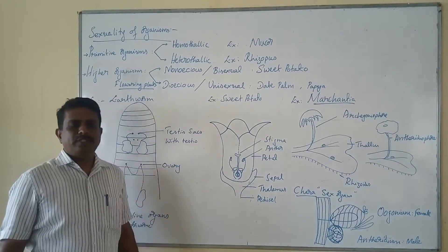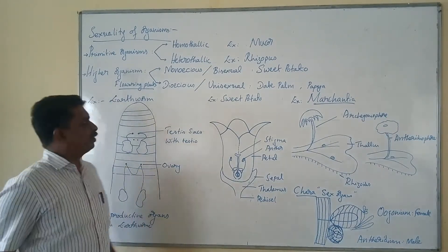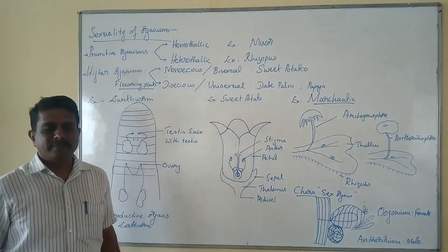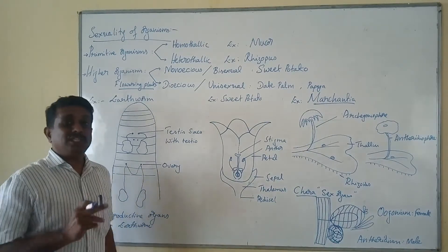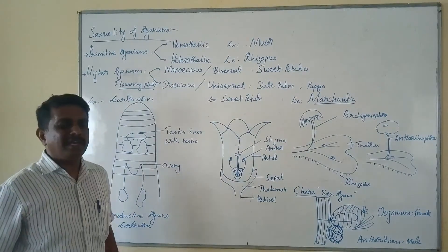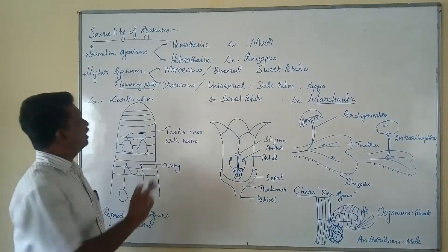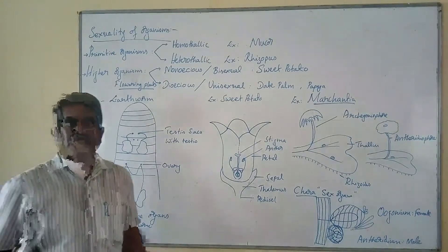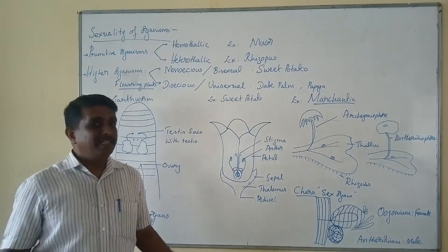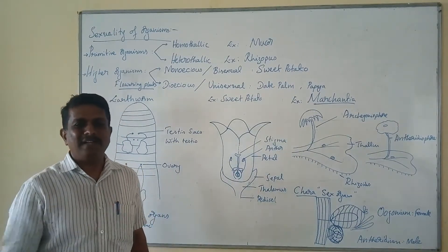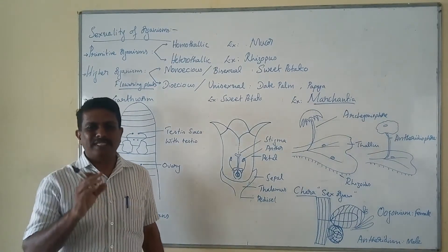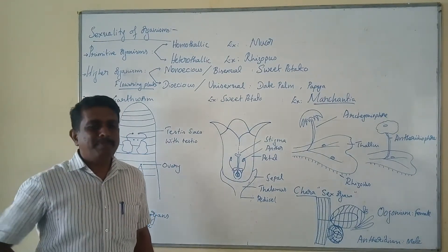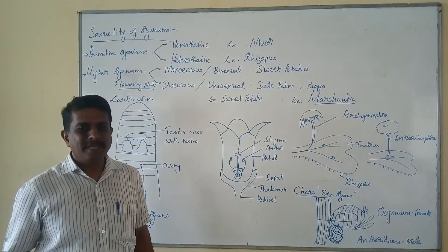Hello students, today we shall discuss the main important features of sexuality of organisms. The determination of sexuality of an organism at molecular level is purely designated as sexuality. In most of the primitive sexually reproducing organisms, there is no morphological or physiological difference in the functional gametes.